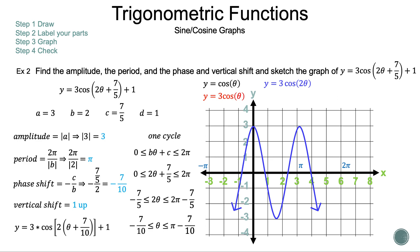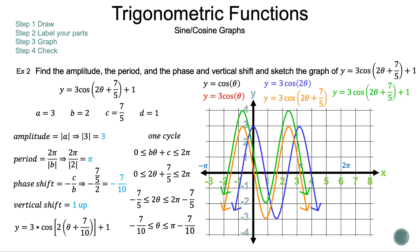Let's get rid of the first two graphs since we have two more graphs to show. Now let's graph y = 3 cosine of 2θ + 7/5 — the graph shifts to the left. Now let's graph y = 3 cosine of 2θ + 7/5 + 1 — is the graph going up or down from y = 3 cosine of 2θ + 7/5? And there we have it — that is example 2.